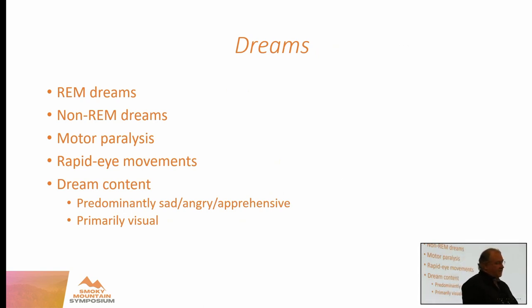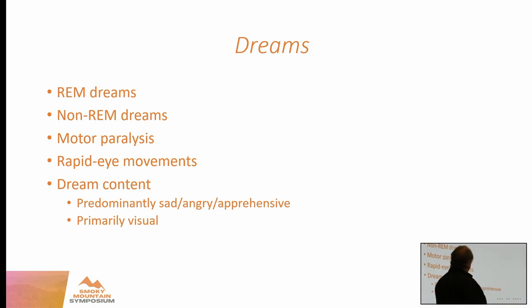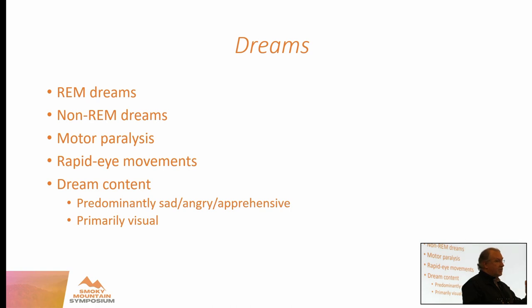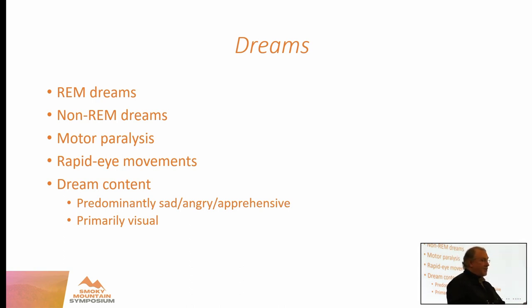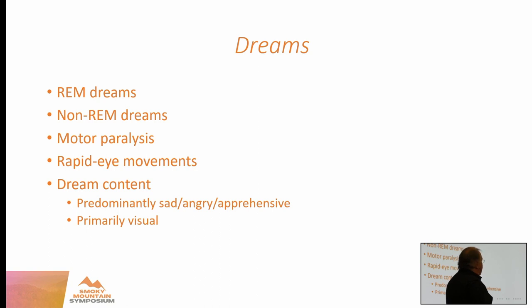In adults, it's abnormal and called REM behavior disorder to be acting out your dreams. In children, not necessarily in dream sleep but with other stages, there's lots more movement. If you've ever had a toddler in bed with you, they kick, they climb, they twirl around, they don't even know they're doing it. Dream content can obviously vary in children and adults — for children, it can be very discomforting and scary. There are some dreams in non-REM stages of sleep, but the majority of dreaming occurs in REM.